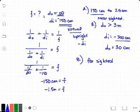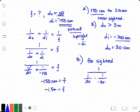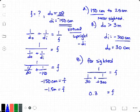Same equation: 1 over DO, which is 30, minus 1 over negative 300, gets us a focal length of 0.33 meters, which is 33 centimeters.